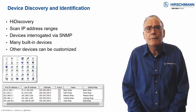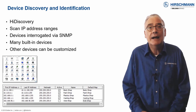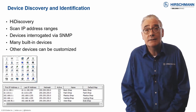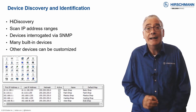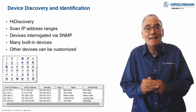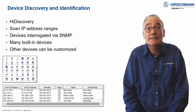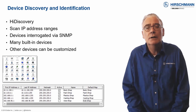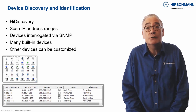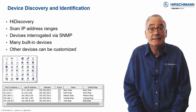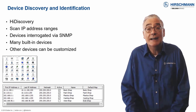For all but the smallest networks, you need an effortless way to discover and identify the devices which should be monitored. For Hirschmann devices, the HiDiscovery function can discover devices even when they do not have an IP address. Assigning an IP address is then just a couple of clicks. Industrial HiVision also allows you to scan multiple IP address ranges and display the discovered devices. Device types are then identified using SNMP.